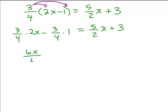So I'm going to write this as 6x over 4 minus 3/4 equals 5/2x plus 3. You could have written this as 3/2, that's fine.